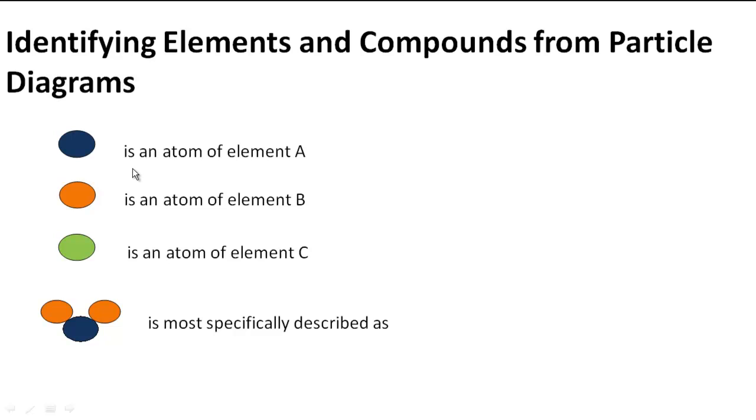Here is a key of the elements and how we're going to identify elements in a particle diagram. This blue stands for an atom of element A. This orange stands for an atom of element B, and green stands for an atom of element C.